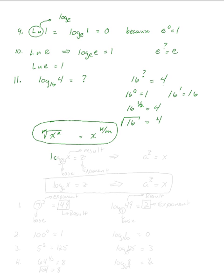Let's generalize: log base a of x equals z. To switch that into exponential notation, a is the base, z is the exponent, and x is the result. So: log base a of x equals z converts to a to the z equals x. That's the general rule to go between logs and exponents.